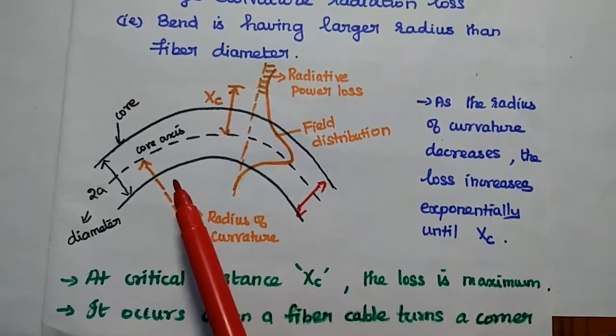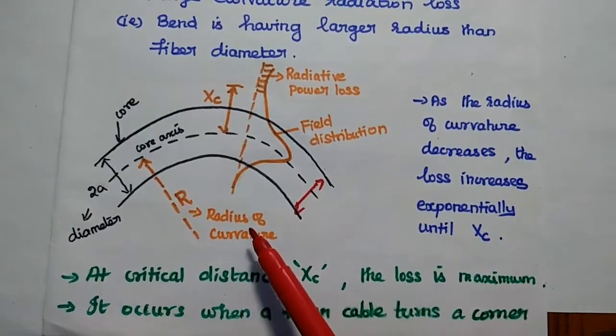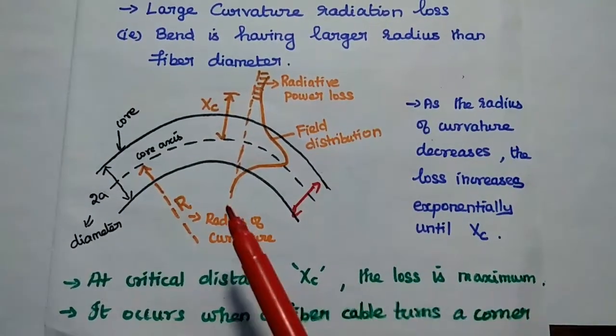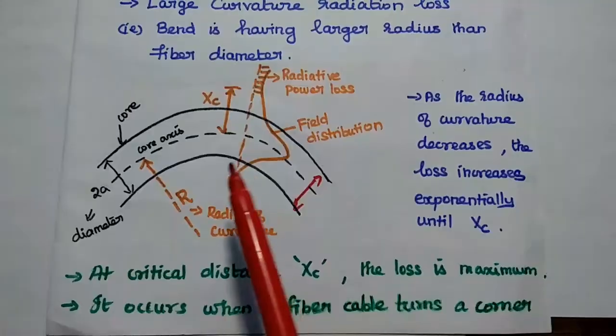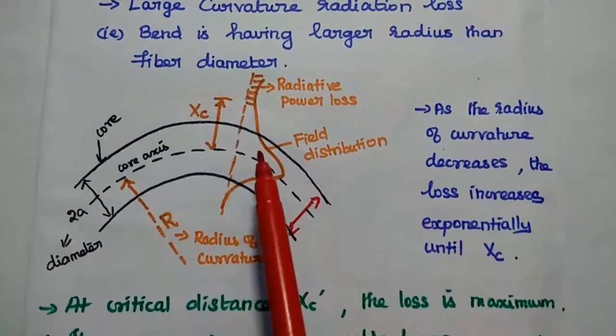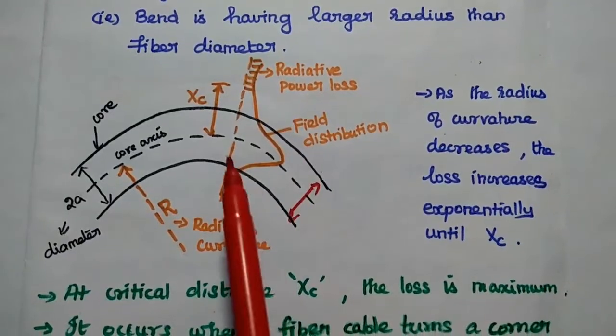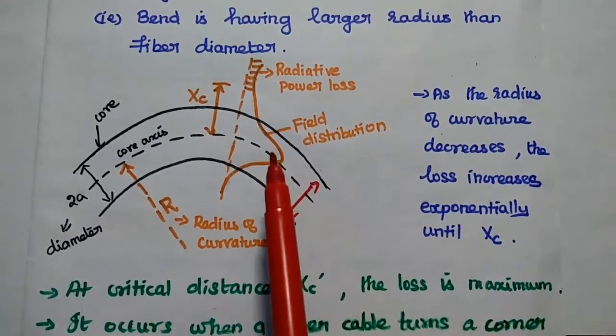As the radius of this curvature decreases further, then the loss increases exponentially. If the radius of curvature decreases means there is a sharp bend of this fiber. In this diagram, this represents the field distribution of the light wave or the mode.